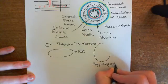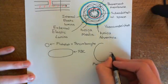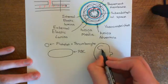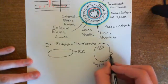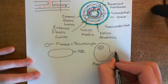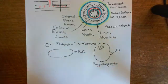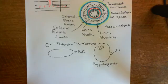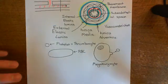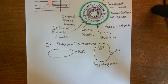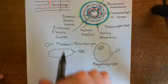These megakaryocytes will pinch off little portions of their membrane. This is our megakaryocyte within the bone marrow, and they'll pinch off portions of their cytoplasm. This little pinched-off portion of their cytoplasm, surrounded by a membrane, is what will become a platelet. So megakaryocytes pinch off little portions of their membrane which are filled with cytoplasm to create these little cell fragments, which are platelets, and they release these into the bloodstream. The platelets are very, very important in the hemostatic pathway.